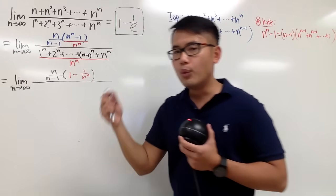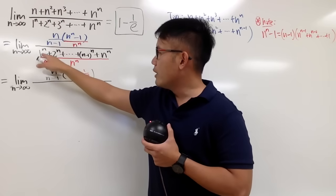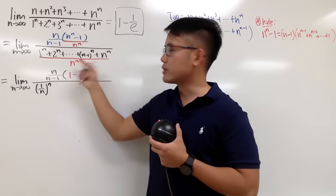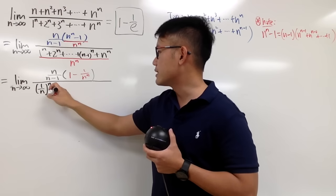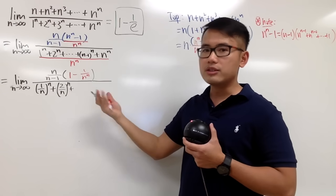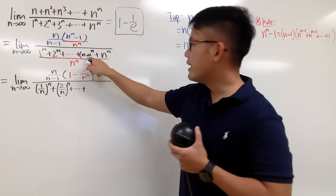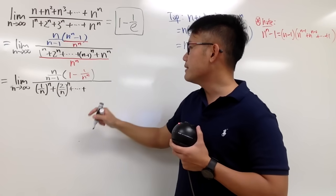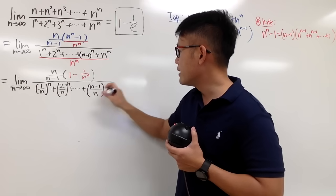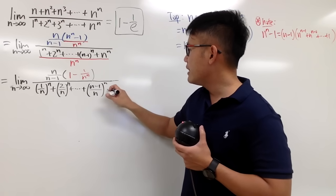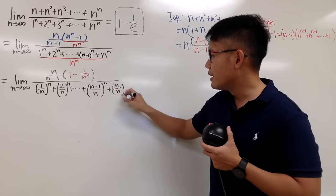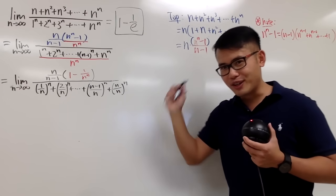For the denominator, we will also split the fraction. It's 1 to the n over n to the n, so I can write it down as 1 over n to the n because the powers are the same. Then we'll do the same thing for the rest. The next one is 2 over n to the n plus 3 over n to the n and so on. Then I will write this down as (n minus 1) over n, all raised to the nth power. And lastly, n over n raised to the nth power, which is just 1.